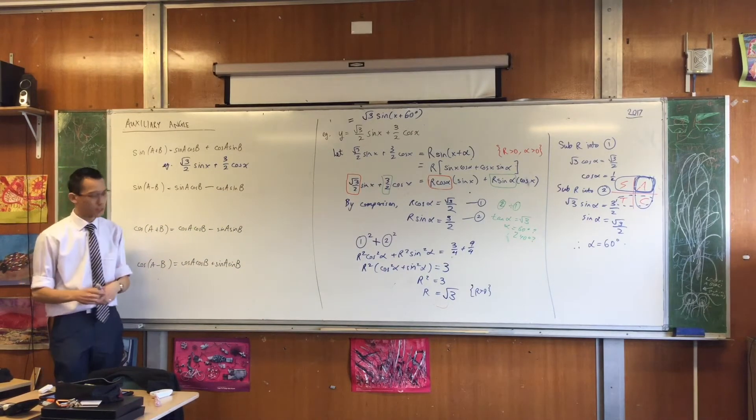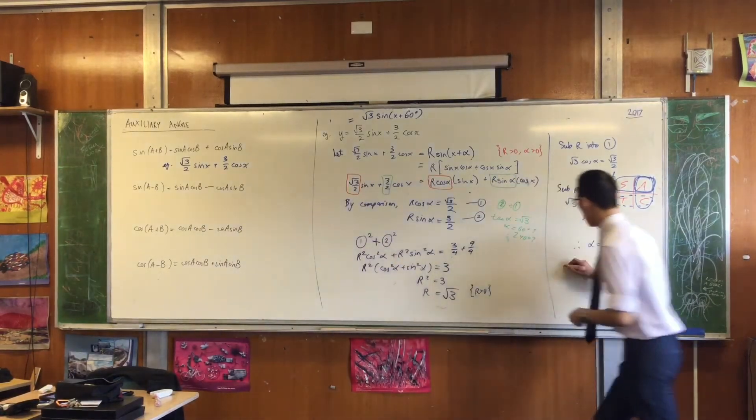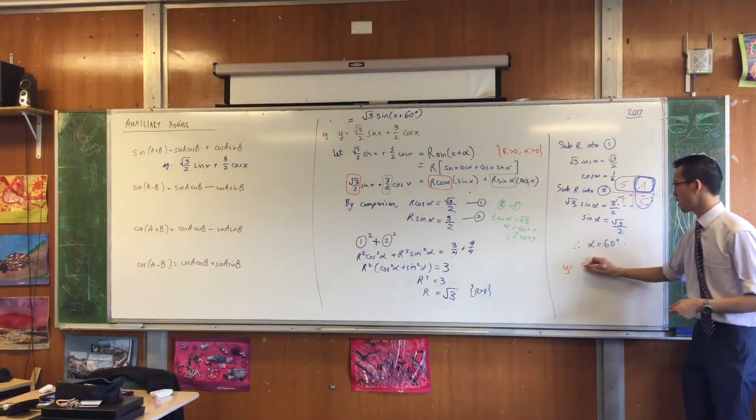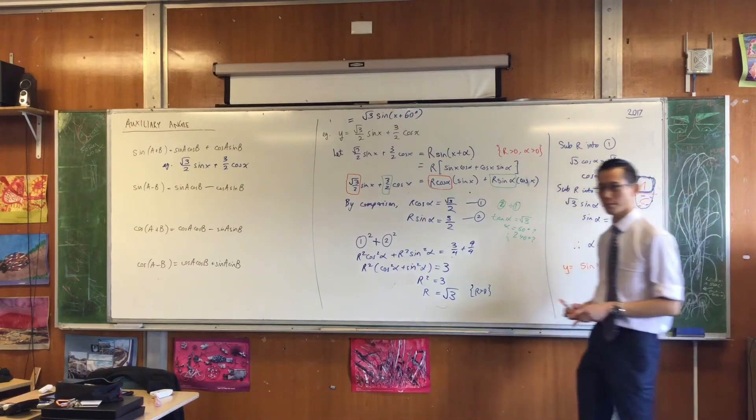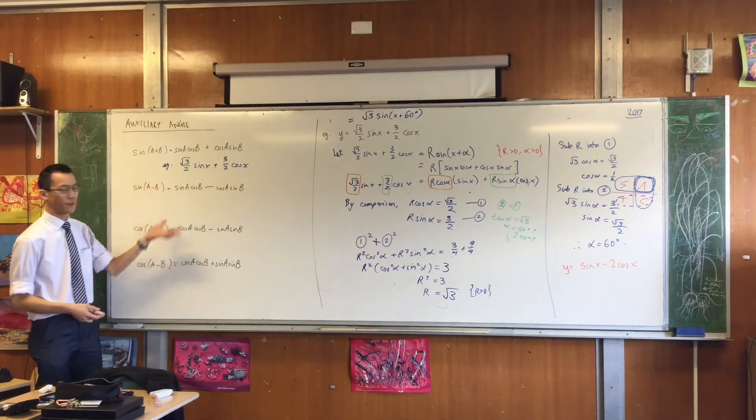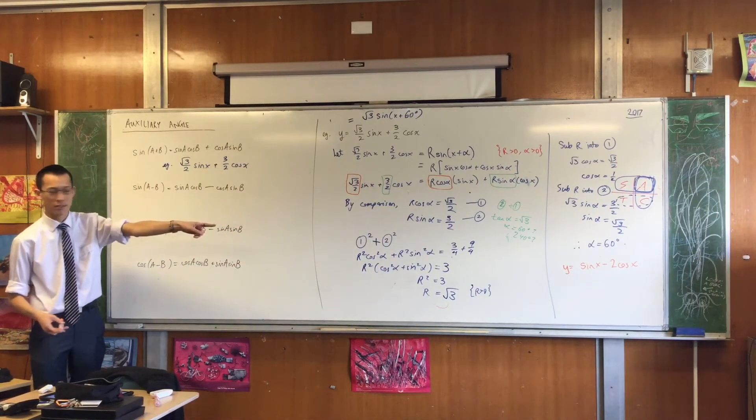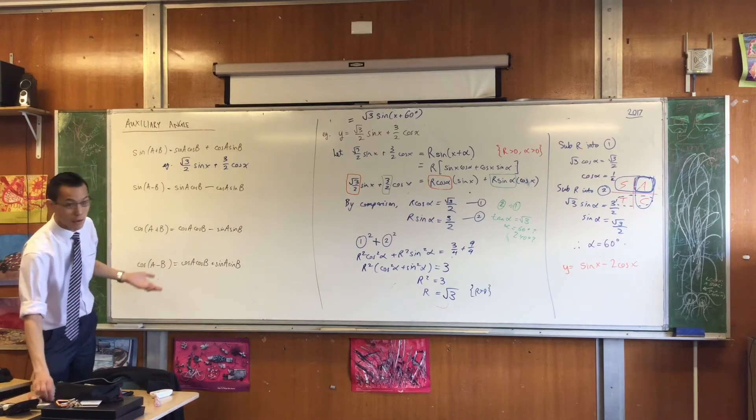So if I, for example, gave you this, I said, okay, y equals sine x minus 2 cos x. When you have a look at this, you say, all right, well, which one is first? It's sine first. And what's the sign in between the two things, the operation? It's minus.